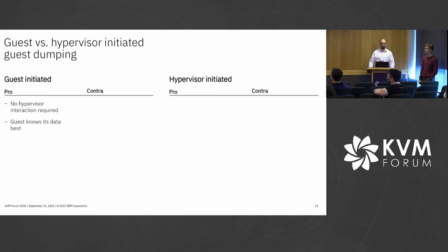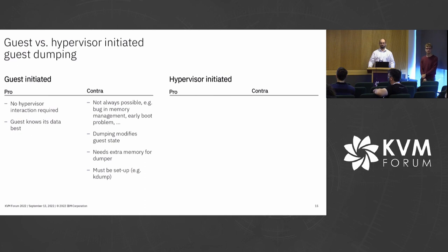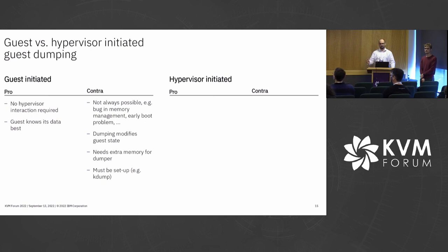A big pro for guest-initiated dump is it needs no hypervisor interaction at all. If you use kdump, for example, you do not need the hypervisor to interact or trust them. The guest also knows its own state — kdump allows page filtering and so on. But a big con is it's not always possible. For example, if you have a bug in memory management, the kernel will not boot, causing early boot problems. We've had a lot of feedback that customers tried to start and forgot to use bounce buffers, so the guest just crashed — in that case, a dump would be really useful. Also, dumping modifies the guest state, which is sometimes even destructive, and it needs extra memory for the dumper in case of kdump, which must be set up in advance.